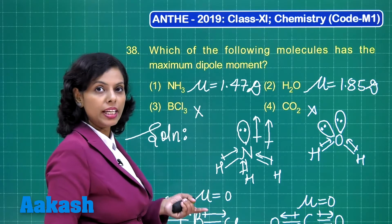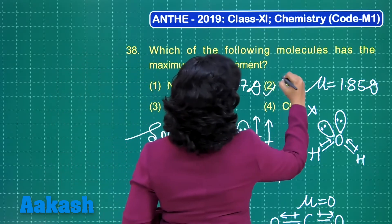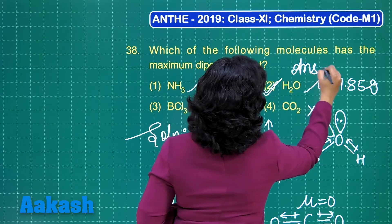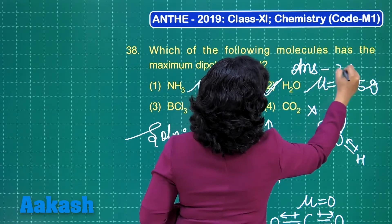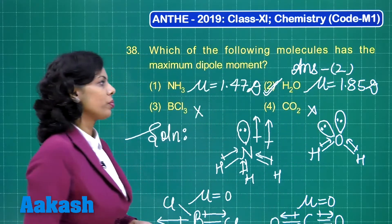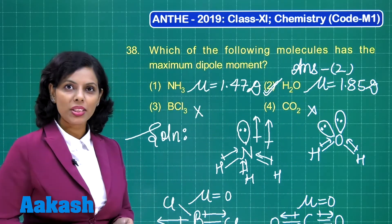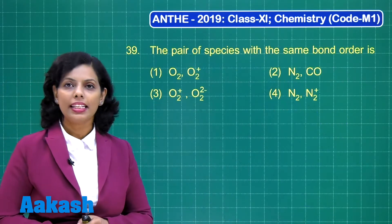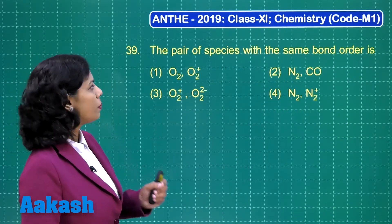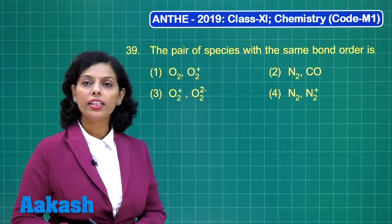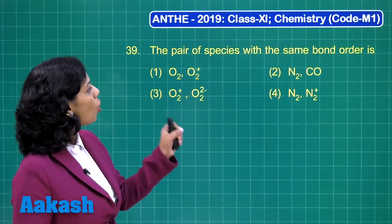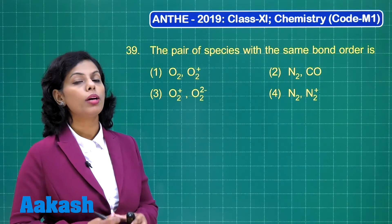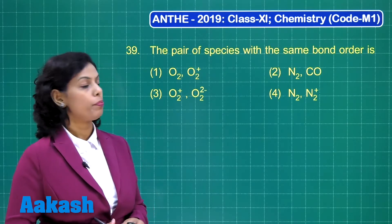The answer is very clear: option 2 (H₂O) is correct. Now the next question is question number 39: the pair of species with the same bond order. In this case you should know the bond order of the given species.